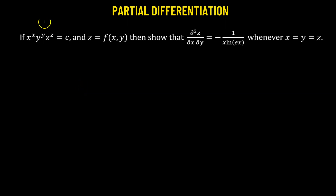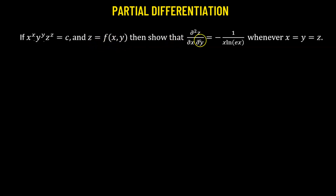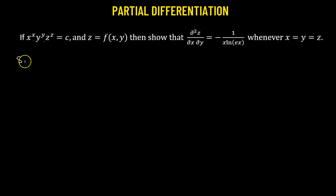In this problem we are given that x raised to the power of x times y raised to the power of y times z raised to the power of z equals a constant c, and z is a function of x and y. We need to show that the second partial derivative of z with respect to y and x equals negative 1 over x times log of e times x, whenever x equals y equals z.